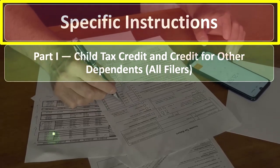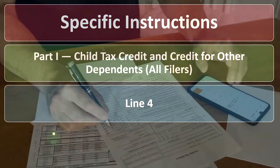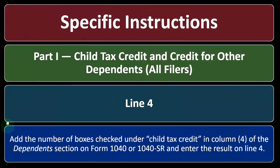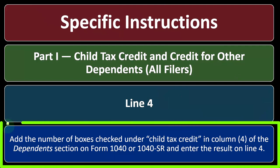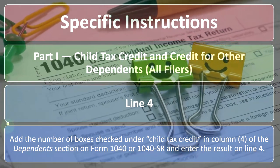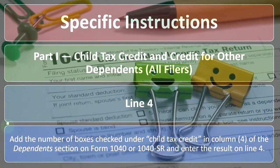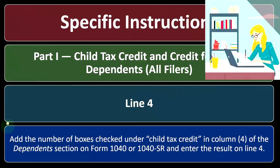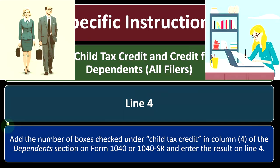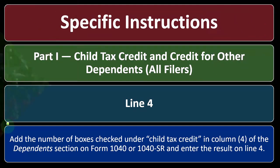Specific instructions, Part 1: Child Tax Credit and Credits for Other Dependents — all filers, line number four. Add the number of boxes checked under 'child tax credit' in column four of the dependents section on Form 1040 or 1040-SR, and enter the results on line four. On the first page of Form 1040, you have your personal information, social security number, your spouse's social security number, and your dependents with their social security numbers. In the dependents section, you'll be checking off if they qualify for the child tax credit or the other dependent credit.